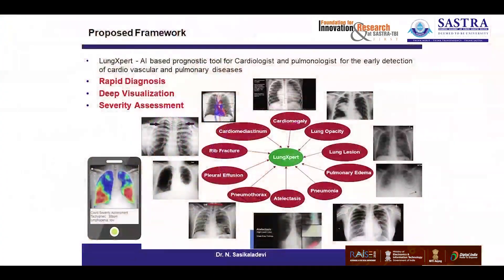In this particular prognostic app, it is trained on 10 basic diseases. One is cardiovascular disease, including heart problems, as well as another type of cardiovascular disease. The remaining pulmonary diseases include lung opacity, lesion, pneumonia, different types of pneumonia, as well as COVID.